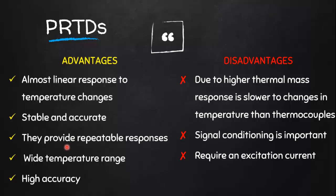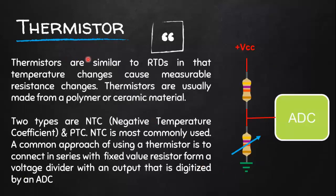RTDs can be used for a wide temperature range and are very accurate. The disadvantages include that due to their higher thermal mass, response is slower to temperature changes compared to thermocouples. Since they require excitation current, signal conditioning is very important in order to read the resistance.